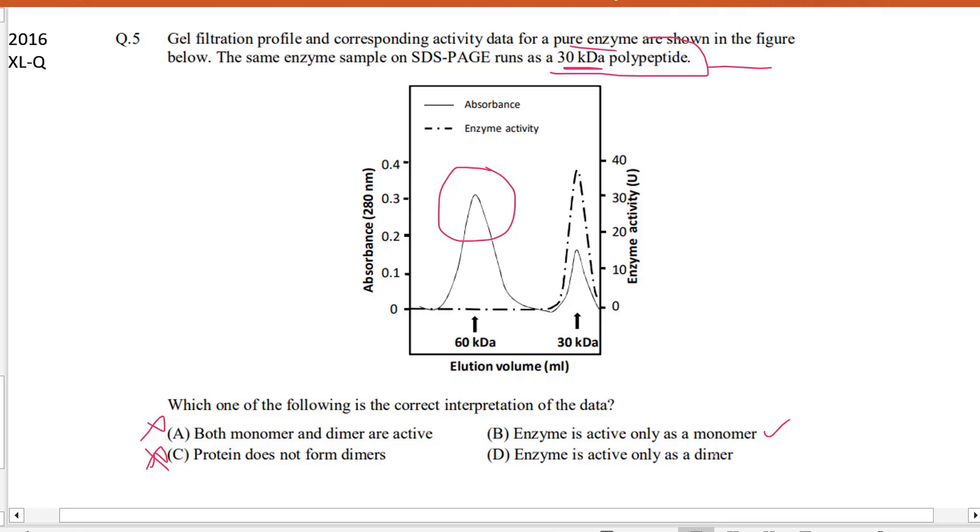And enzyme is only active as a dimer, that is also wrong. So the only correct option is B: enzyme is active only as a monomer.